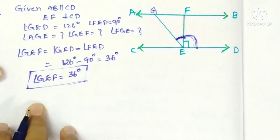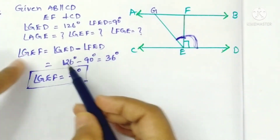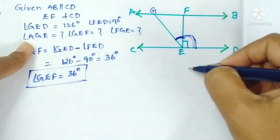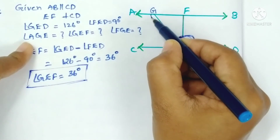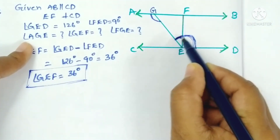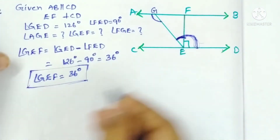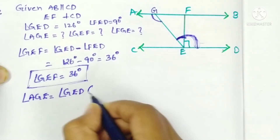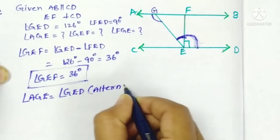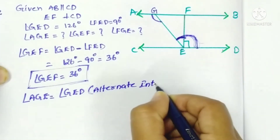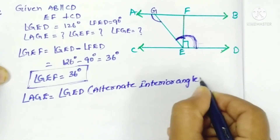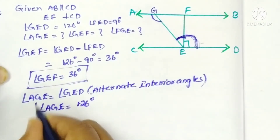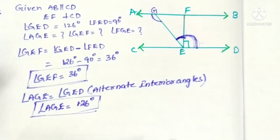Next, AB and CD are parallel lines with EG as a transversal. Angle AGE and angle GED are alternate interior angles, so angle AGE equals angle GED equals 126 degrees.